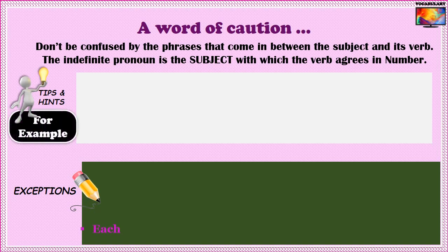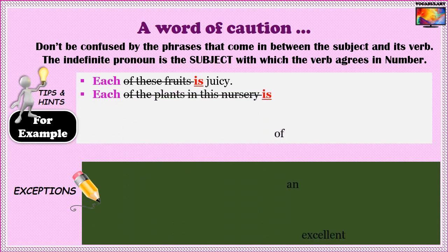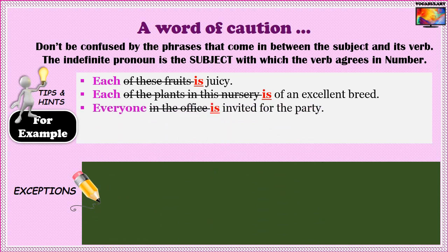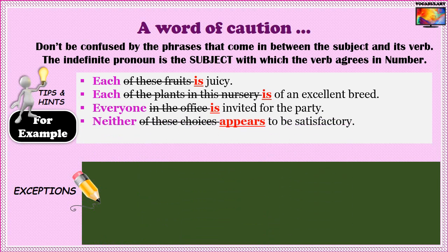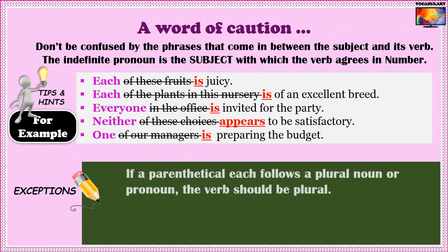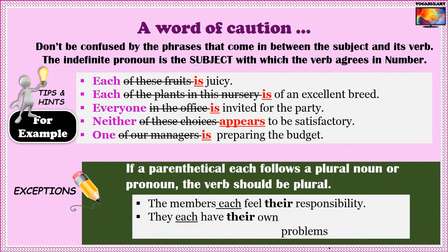Examples with intervening prepositional phrases: 'Each of these fruits is juicy.' 'Each of the plants in this nursery is of an excellent breed.' 'Everyone in the office is invited for the party.' 'Neither of these choices appears to be satisfactory.' 'One of our managers is preparing the budget.' One more exception: if a parenthetical 'each' follows a plural noun or pronoun, the verb should be plural. Examples: 'The members each feel their responsibility.' 'They each have their own problems.' 'Ten each of these books are required.'